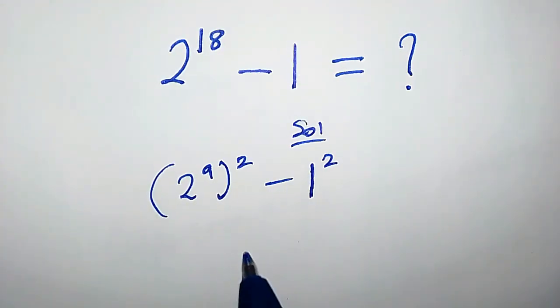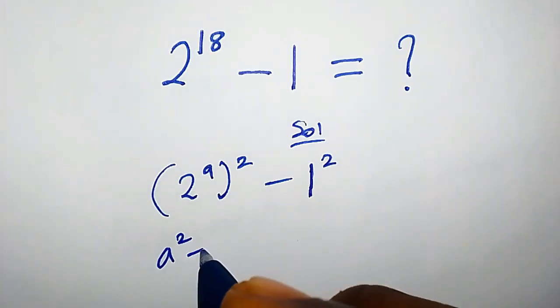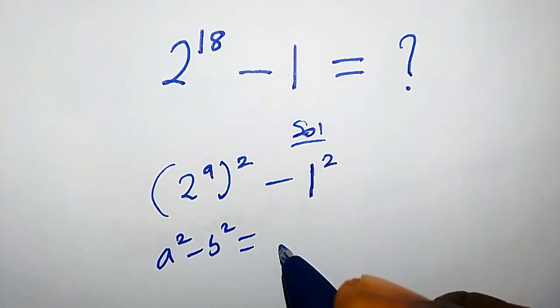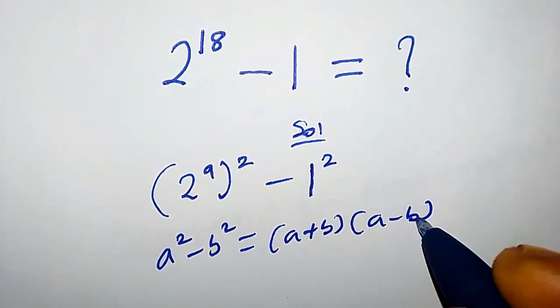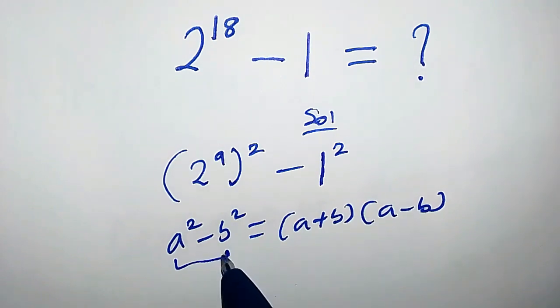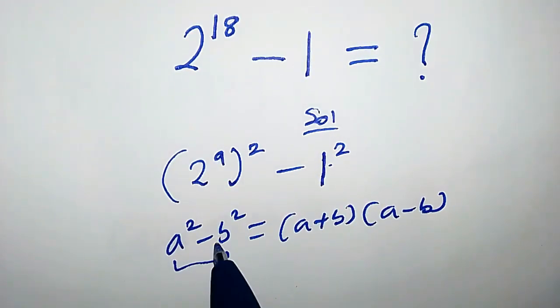You will observe that this expression looks like a difference of two squares. Whenever we have a squared minus b squared, it's simply the same thing as a plus b times a minus b. By comparing this left-hand side with this guy, you observe that a equals 2 to the power of 9 and b equals 1.